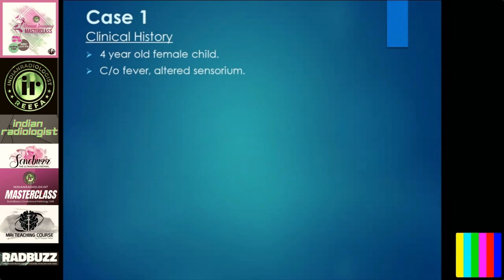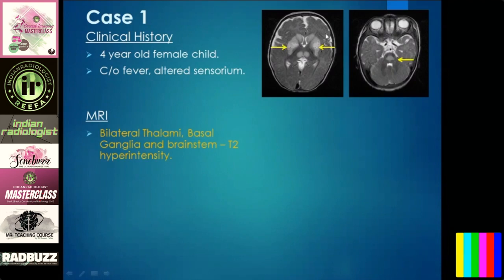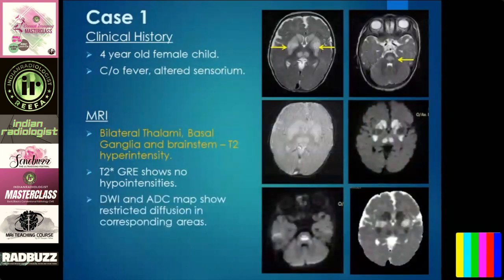Case one: a four-year-old female with fever and altered sensorium. The images show bilateral thalamic and basal ganglia and brainstem T2 hyperintensity. There was no hypointensity on GRE. On diffusion-weighted imaging, the ADC showed restricted diffusion.